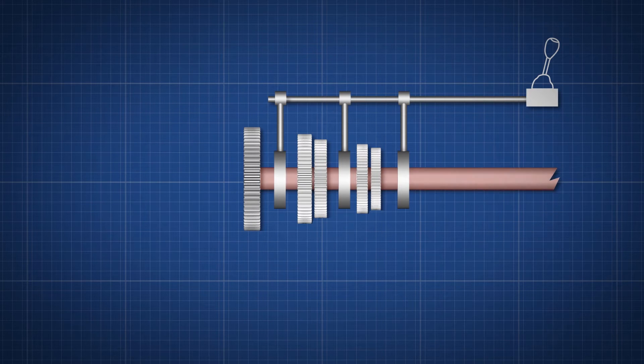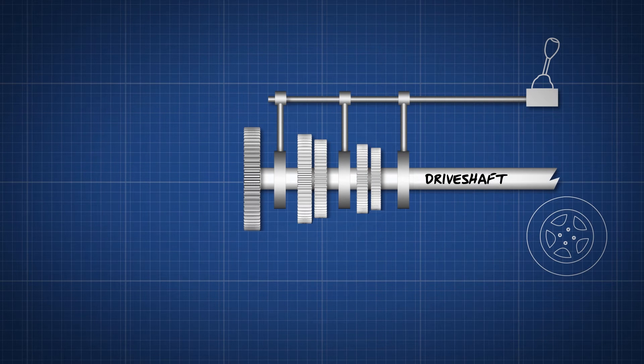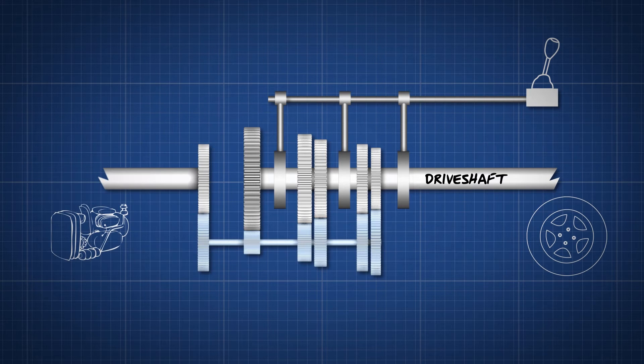These gears are on a shaft that is connected to the wheels—it's called the drive shaft. To make a car move, you have to connect the clutch from the engine to the drive shaft.